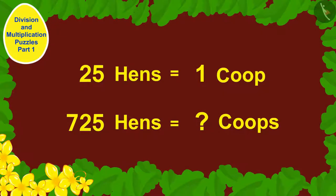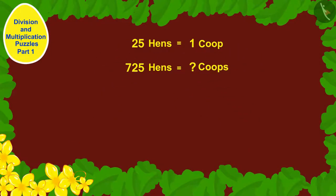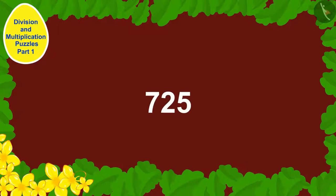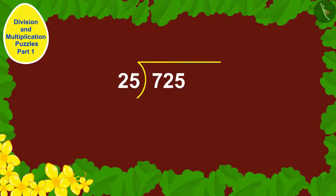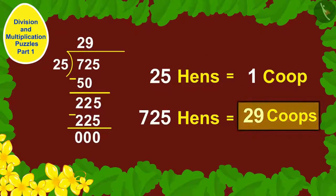Children, can you help Babban? If you wish to, you can pause the video and find the answer. We have to use the process of division to find a solution to this question. We can find the answer by dividing 725 by 25. Babban would have to build 29 coops to keep his 725 hens.